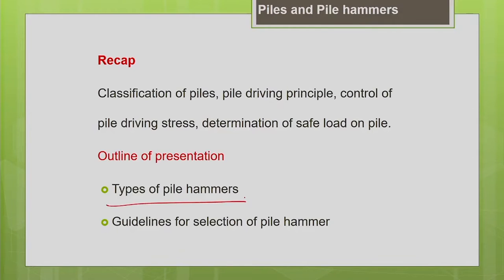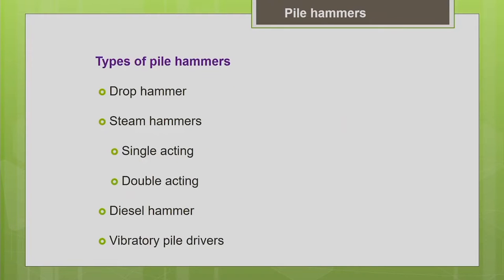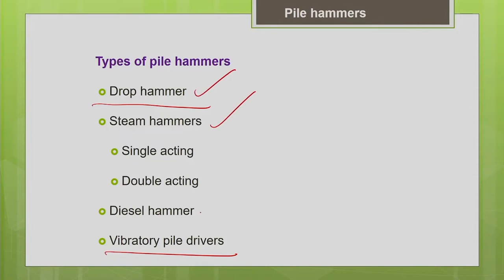Let us look into the outline of today's presentation. We will be discussing the different types of pile hammers and the guidelines for selection of the pile hammer — how to select the pile hammer for a particular type of soil, length of pile, weight of pile, and material type. We will cover types ranging from the oldest drop hammer to modern vibratory pile drivers: drop hammer, steam hammers, diesel hammer, and vibratory pile drivers.